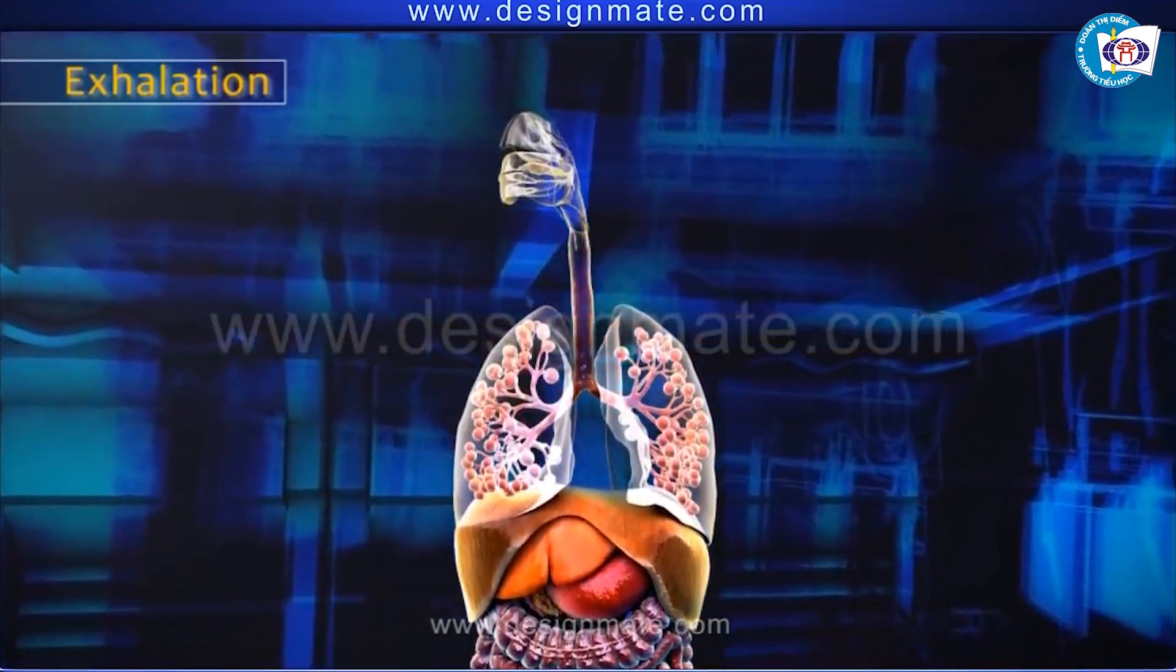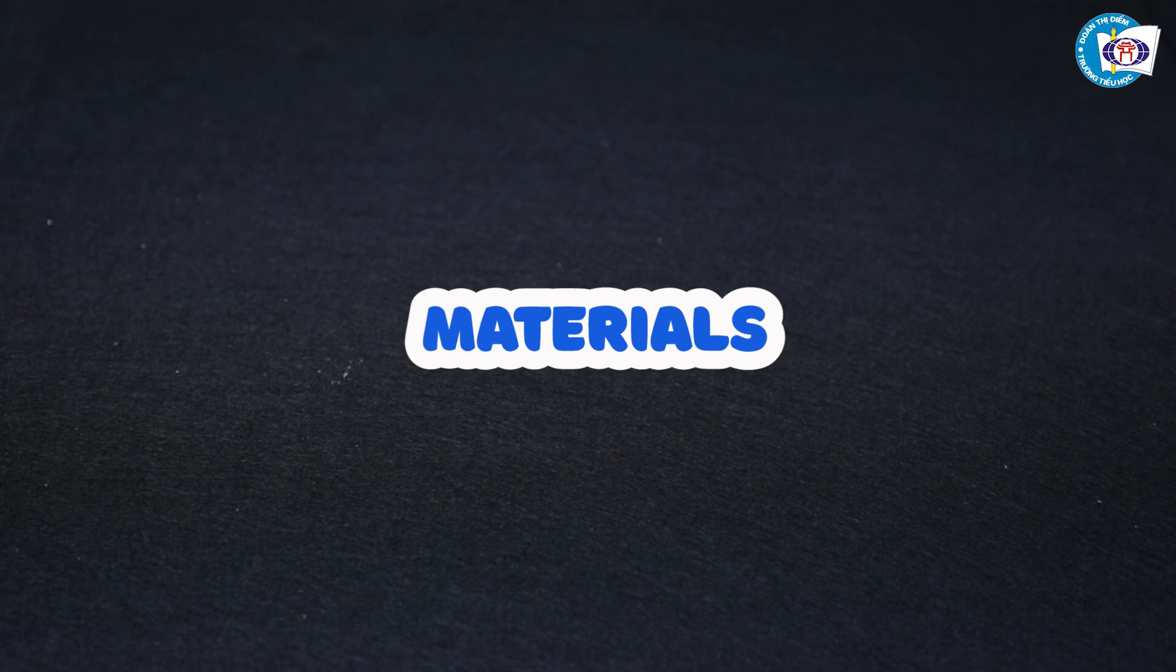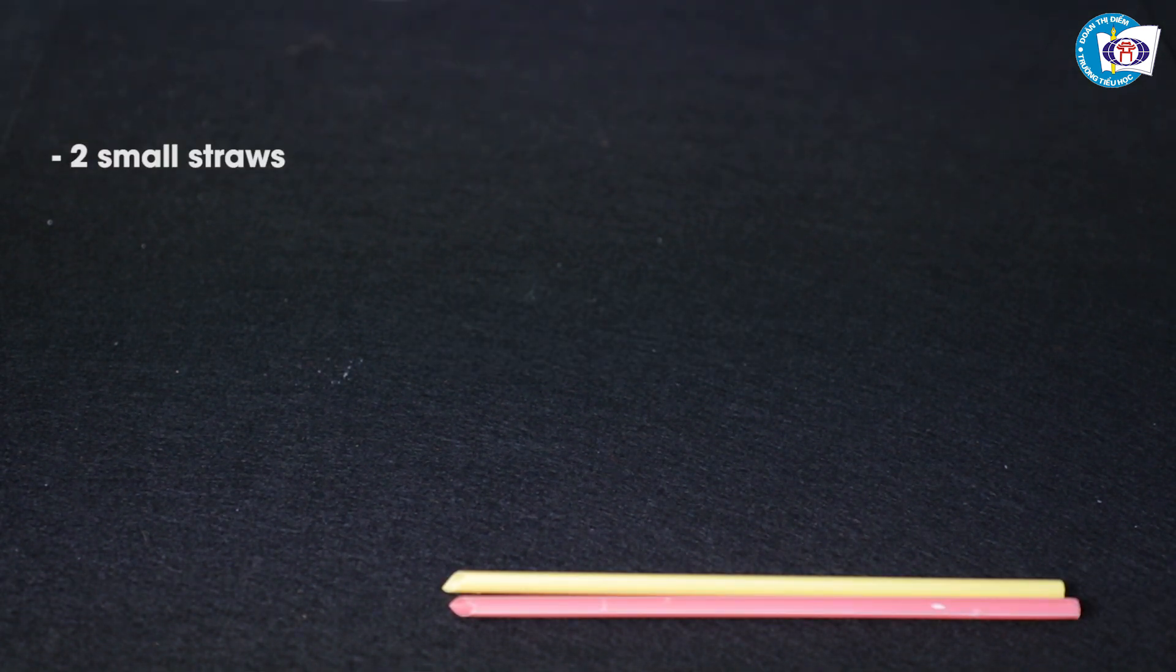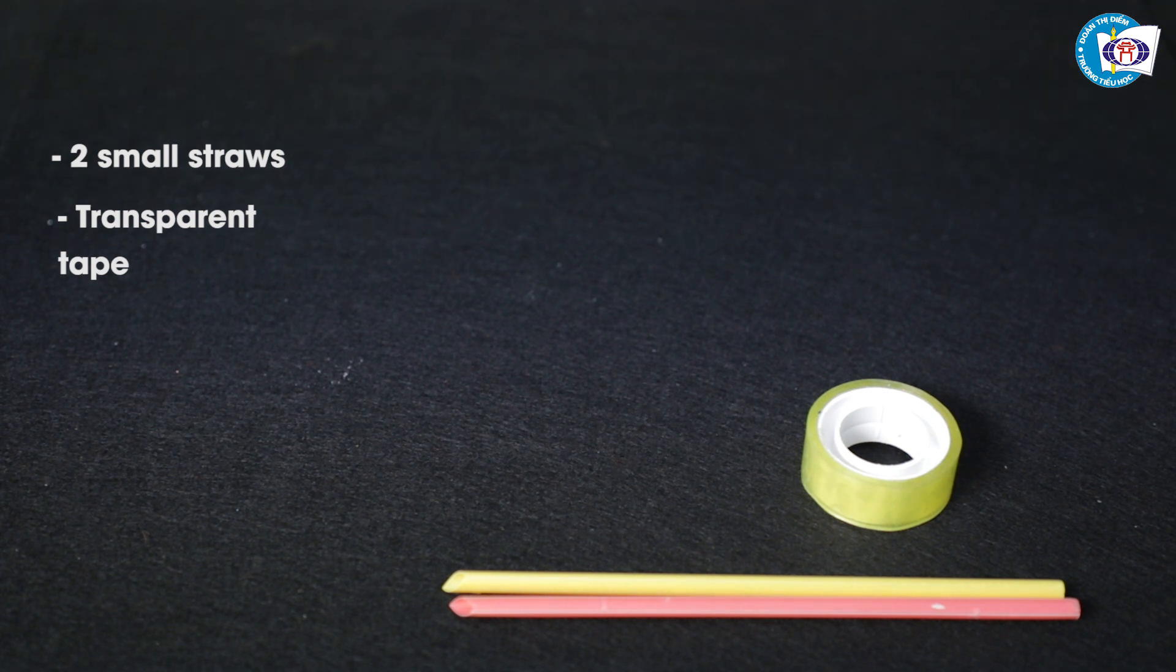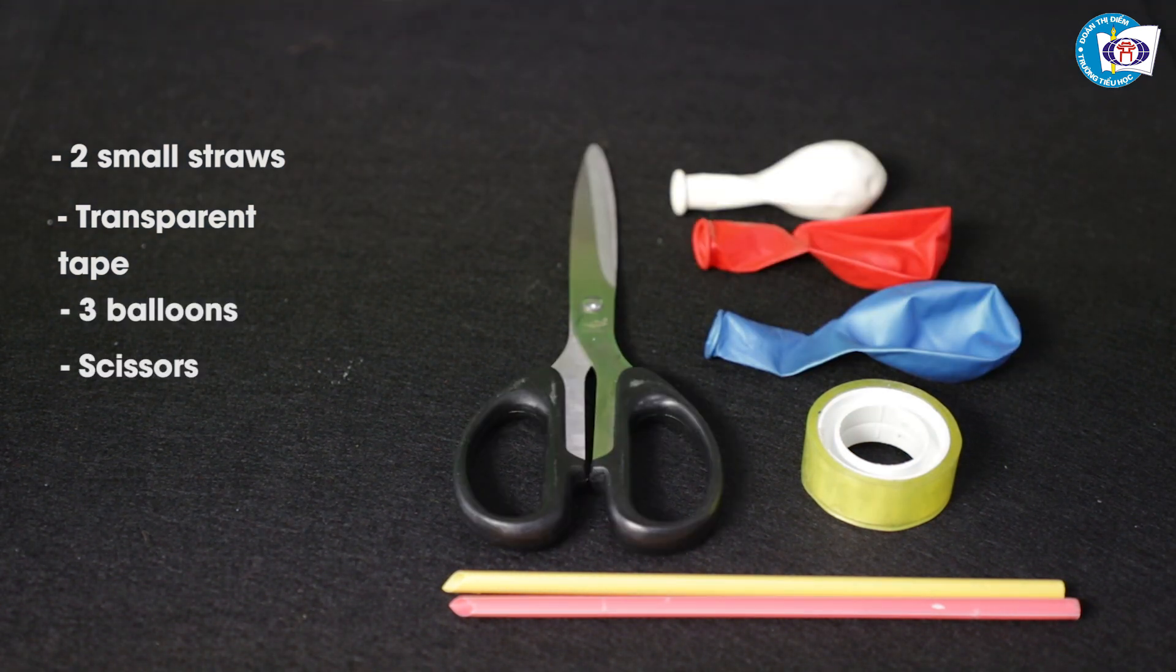let's model a respiratory system. We'll need these materials: 2 straws, transparent tape, 3 balloons, scissors,